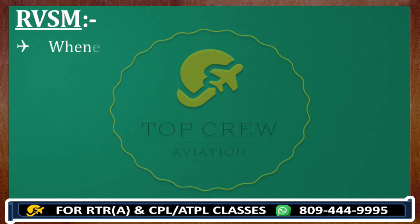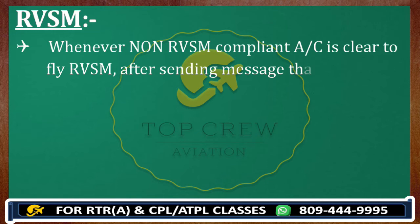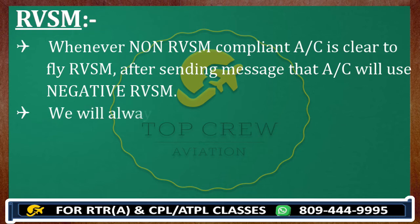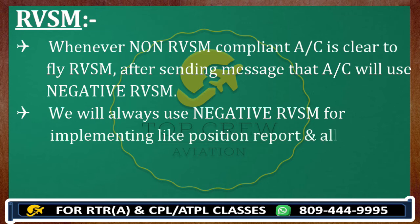Whenever a non-RVSM compliant aircraft is cleared to fly in RVSM airspace, that aircraft must always use 'Negative RVSM' in all subsequent communications — including position reports and all other calls. Once you are not complying with RVSM but still flying in RVSM airspace under a specific category with ATC approval, you will append 'Negative RVSM' to your callsign in every transmission. For example: 'Negative RVSM, Victor Tango Alpha Bravo Charlie, on 121.5.'